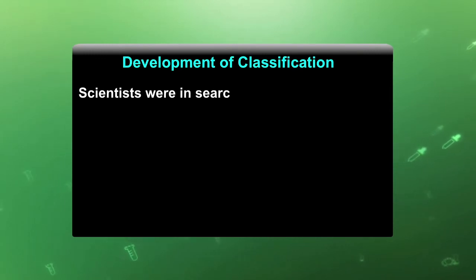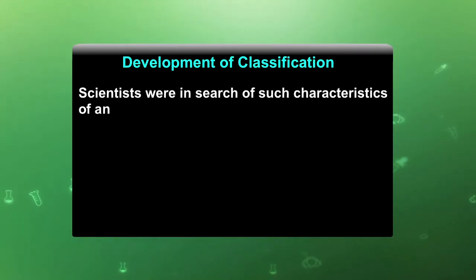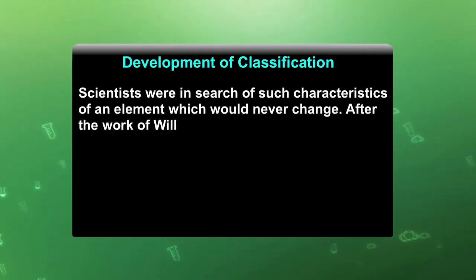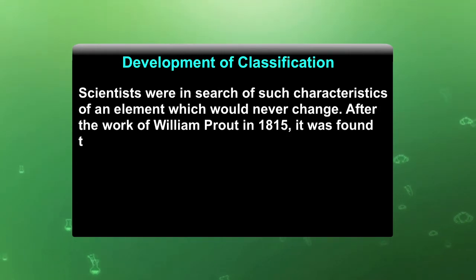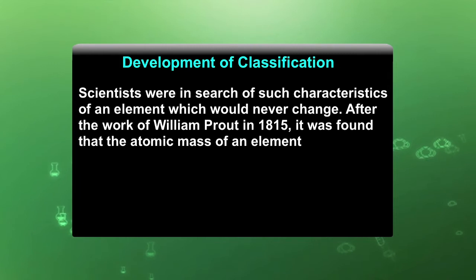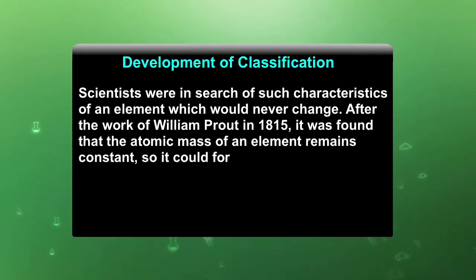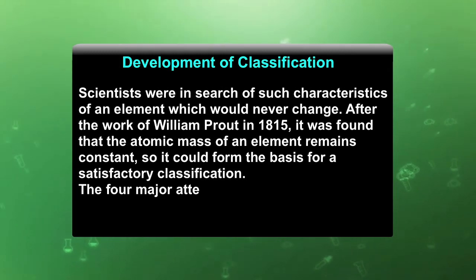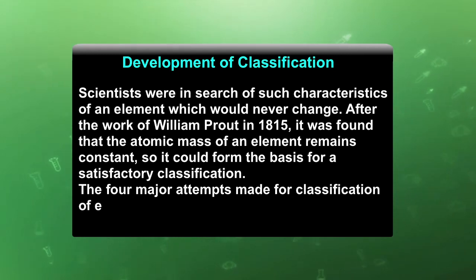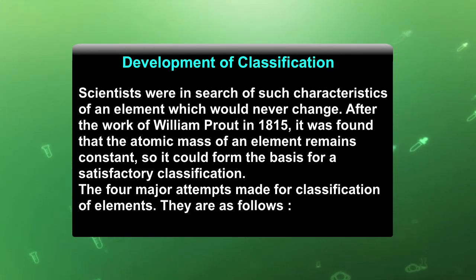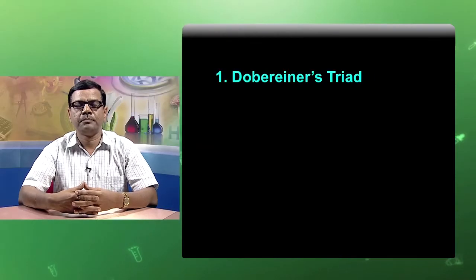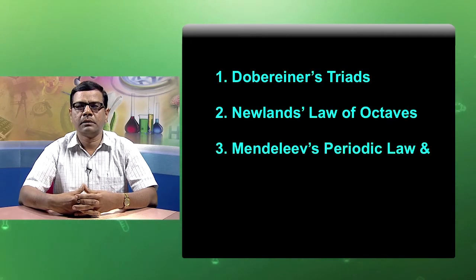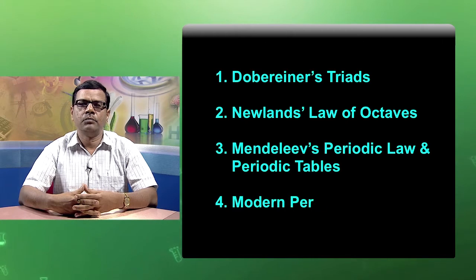Development of classification: Scientists were in search of such characteristics of an element which would never change. After the work of William Proust in 1815, it was found that the atomic mass of an element remained constant, so it could form the basis of satisfactory classification. The four major attempts made for classification of elements are: Dobereiner's Triads, Newland's Law of Octaves, Mendeleev's Periodic Law and Periodic Table, and the Modern Periodic Table.